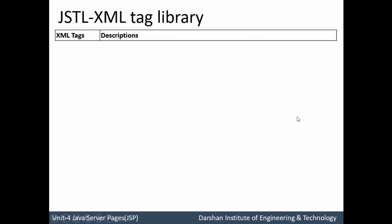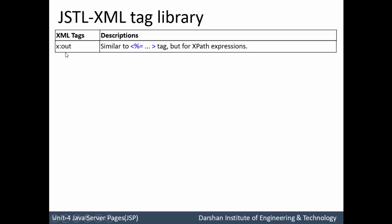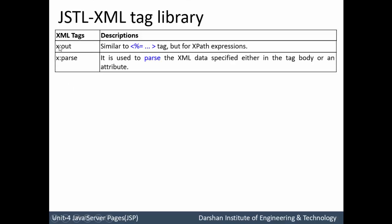Now let us learn certain XML tags with their descriptions. First is x:out. If you remember, c:out is used as an expression — for example, if I want to write something in output I use c:out. Similarly for XML documents we use x:out, which is similar to an expression in a JSP scriptlet but for XPath expressions. Next tag is x:parse, which is used to parse XML data specified in the tag body or an attribute.